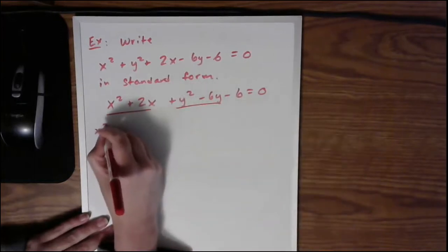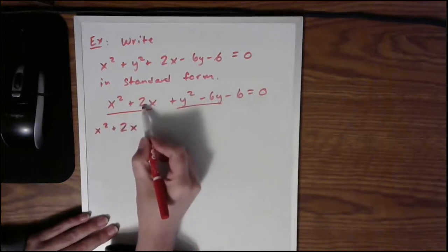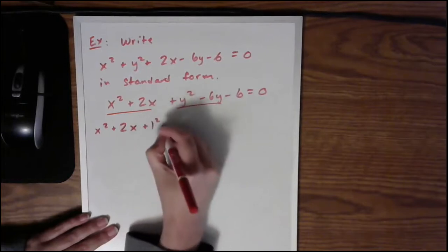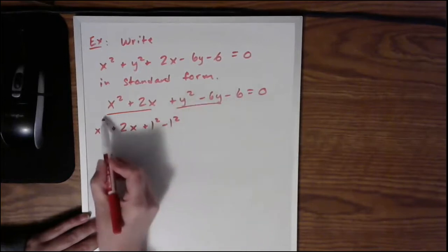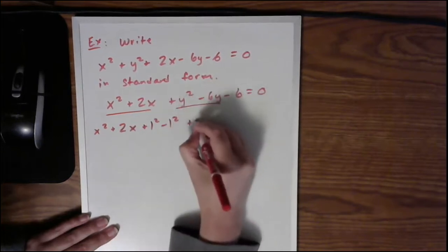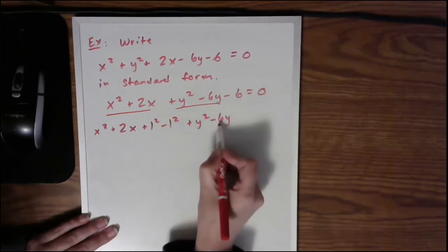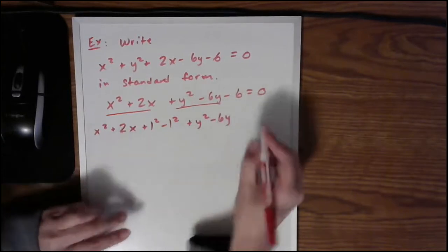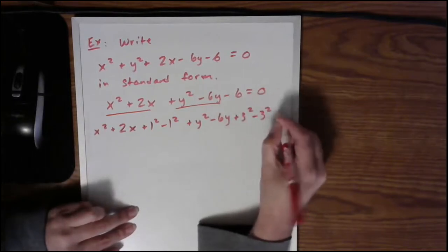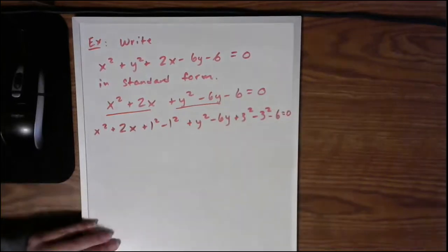And then we'll have to complete the square twice, once here and once here. So let's start with the x's first, divide 2 in half to get 1, square 1, add and subtract. So that takes care of that one. Then do the same thing for the y's. So then take 6 and divide it in half to get 3, square it, add it, subtract it. And then don't forget about the rest of the equation. So -6 = 0.